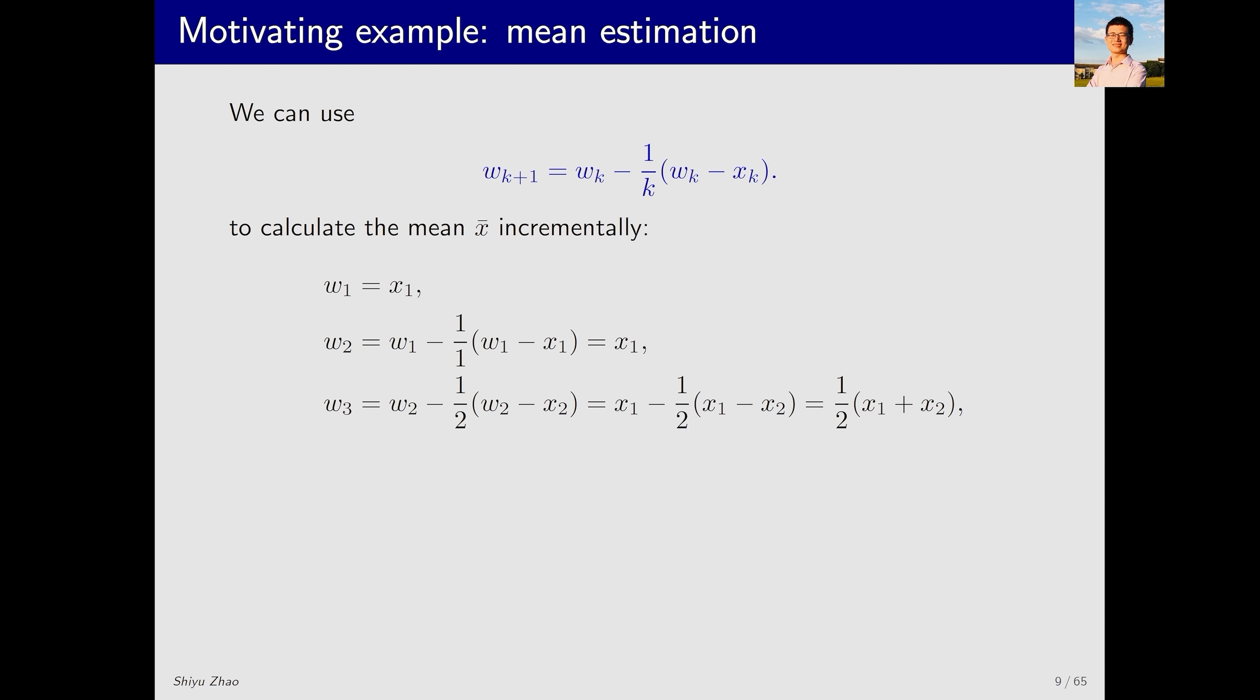For w_3, we substitute w_2 equal to x_1 back into the equation. This is x_1 and this is x_1. After some calculations, we get that w_3 equals 1/2 times (x_1 + x_2). Following this pattern, we get w_4 equals 1/3 times the sum of x_1, x_2 and x_3.